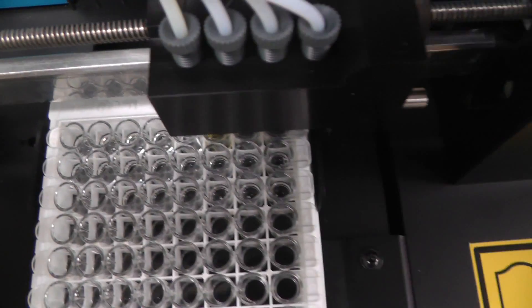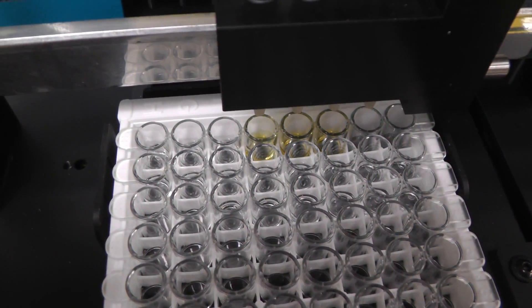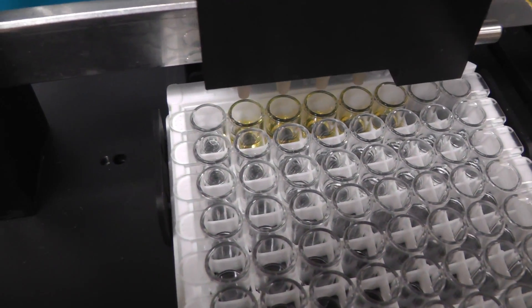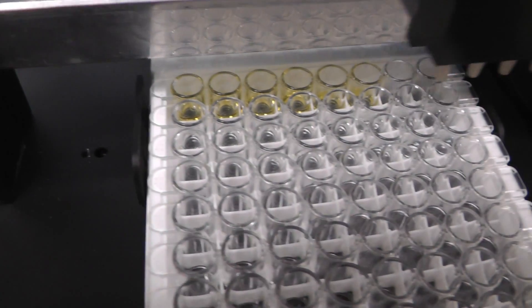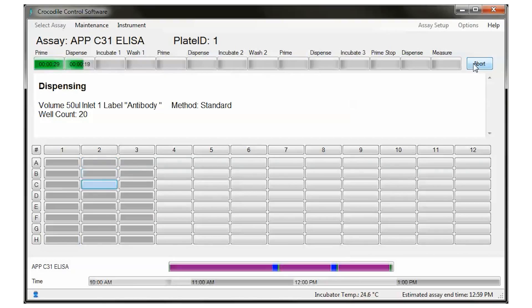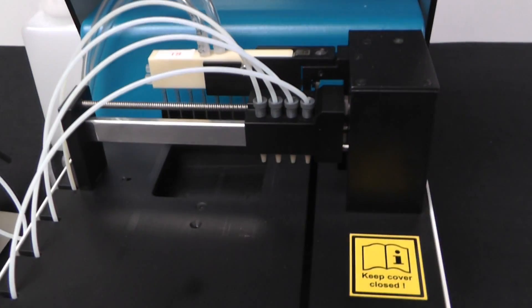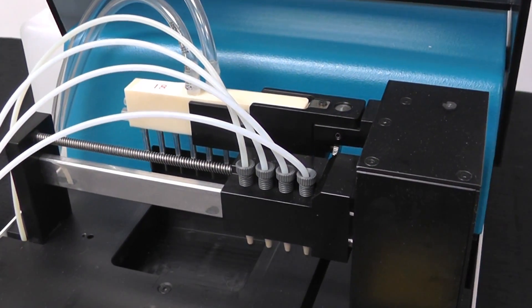We dispense 50 microliters of antibody solution into each well except the blank. Now we shake the plate for one hour in the incubation chamber.